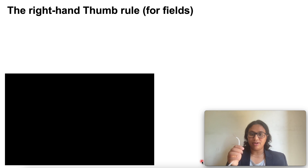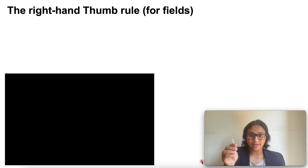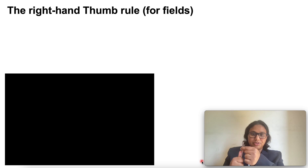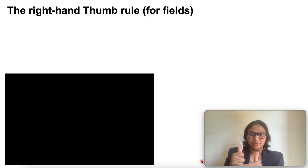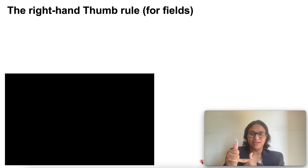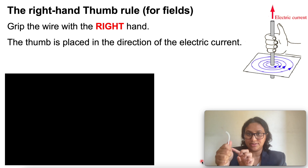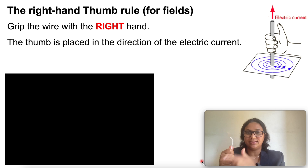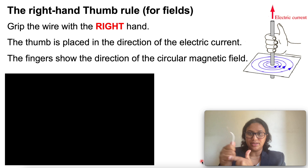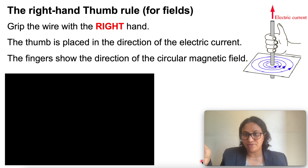Imagine that you are holding a current carrying straight conductor in your right hand such that the thumb points towards the direction of current. Then your fingers will wrap around the conductor in the direction of the field lines of the magnetic field. To repeat: grip the wire with the right hand, the thumb is placed in the direction of electric current, and the fingers show the direction of the magnetic field.